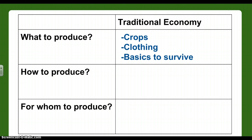How to produce in a traditional economy — how are we making this happen? Basically farmers and families. We have farmers growing the food, and families either raising livestock or hunting for food, tending their kids, and making sure we get water and all that. It's very simple in the traditional economy.